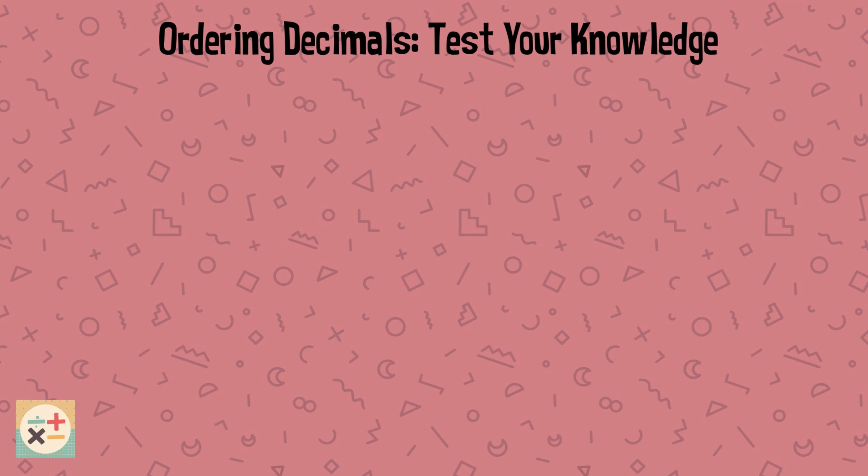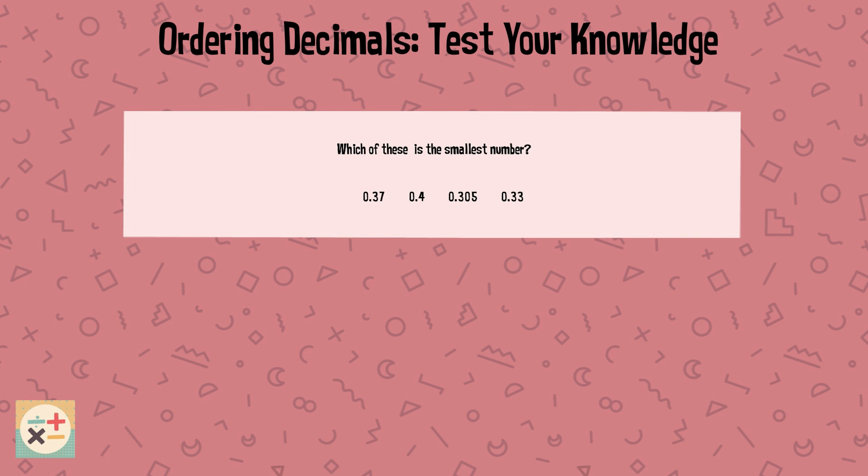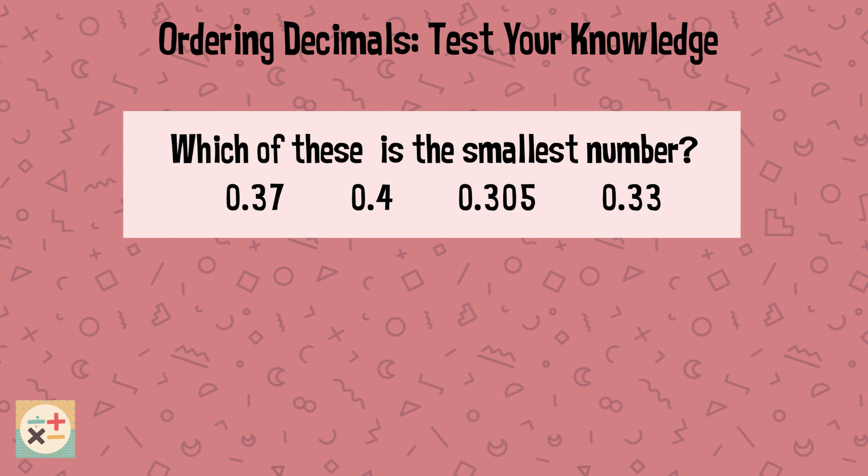Question 2. Which of these is the smallest number? 0.37, 0.4, 0.305, or 0.33?